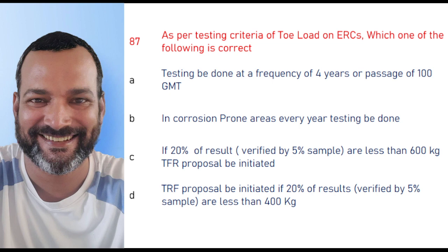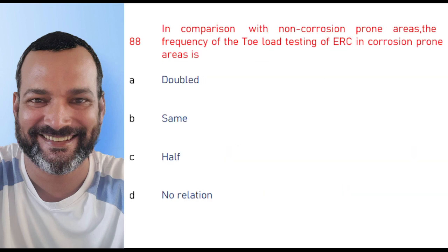Option D is the correct answer: TFR proposal to be initiated if 20% of results verified by 5% of the sample size are less than 400 kg. In comparison with non-corrosion prone areas, the frequency of toe load testing of ERCs in corrosion prone areas is doubled.